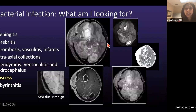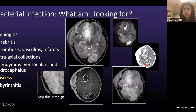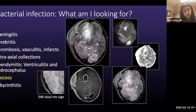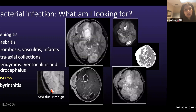Abscesses: here are multiple lesions in a patient with Strep intermedius infection showing characteristic low diffusivity, lots of surrounding edema, and ring enhancement. A helpful sign when differentiating abscess from tumor is the dual rim sign on susceptibility-weighted imaging — the inner hyperintense line represents granulation tissue, and the outer hypointense line is hemosiderin deposition in the fibrocollagenous capsule. This can also sometimes be seen on T2 and FLAIR.